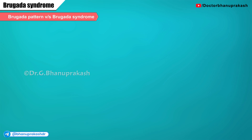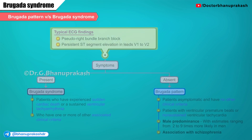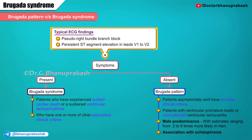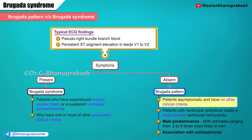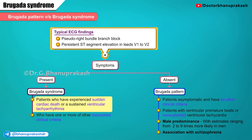Brugada pattern versus Brugada syndrome: these are two terms distinguished by the presence or absence of symptoms, used to describe patients with the typical ECG findings of a pseudo right bundle branch block and persistent ST segment elevations in leads V1 and V2. Patients with typical ECG features who are asymptomatic and have no other clinical criteria are said to have the Brugada pattern. Patients with typical ECG features who have experienced sudden cardiac death or a sustained ventricular tachyarrhythmia, or who have one or more other associated clinical criteria, are said to have the Brugada syndrome.